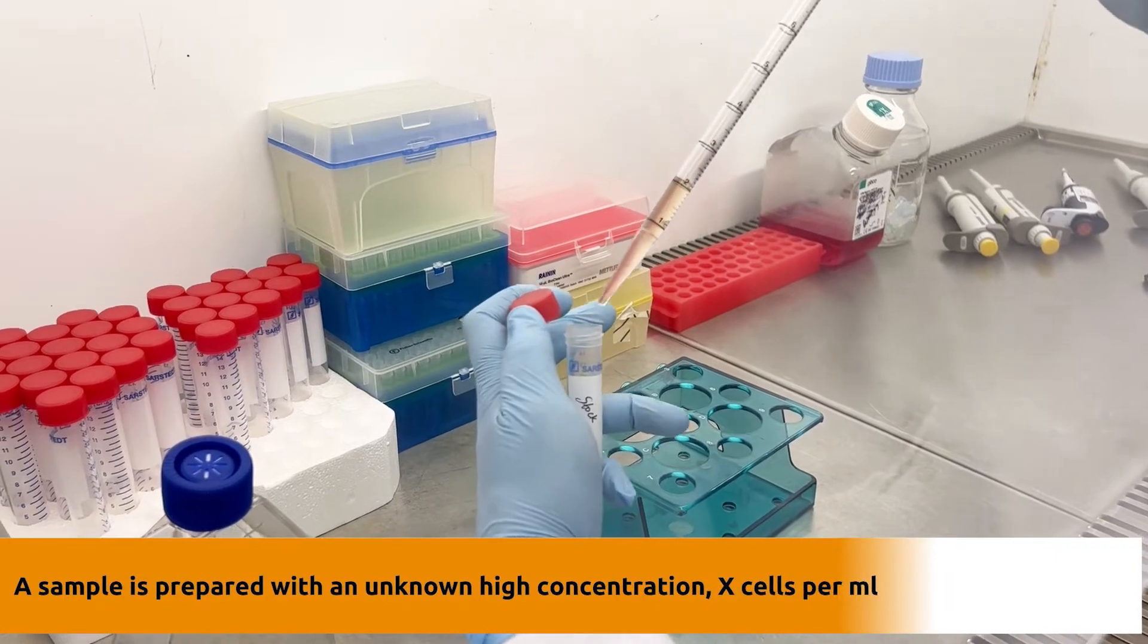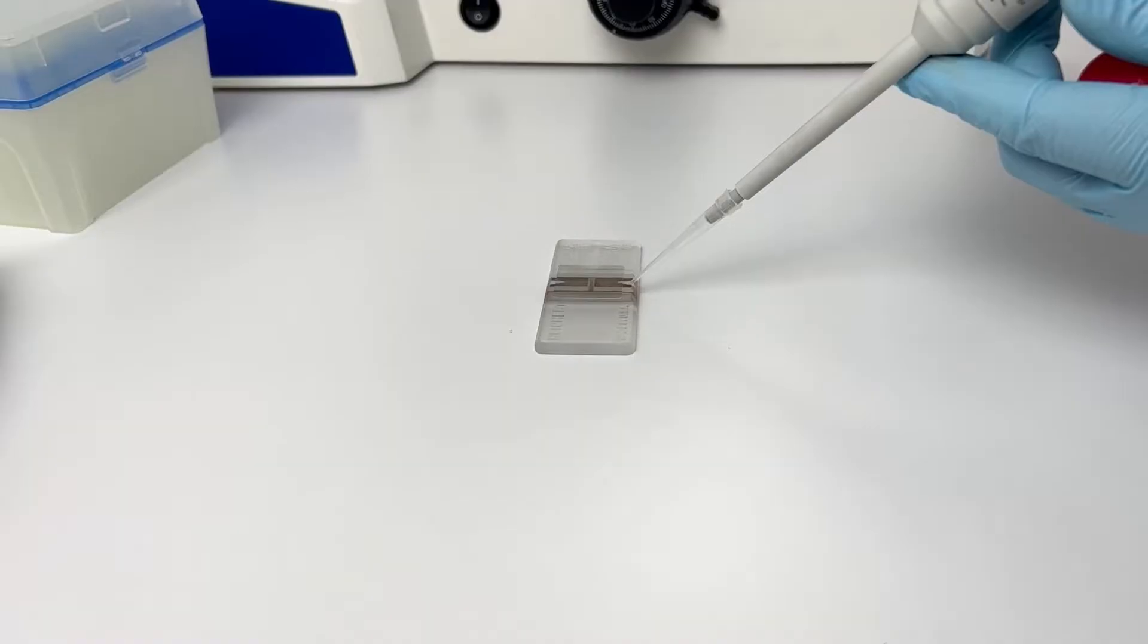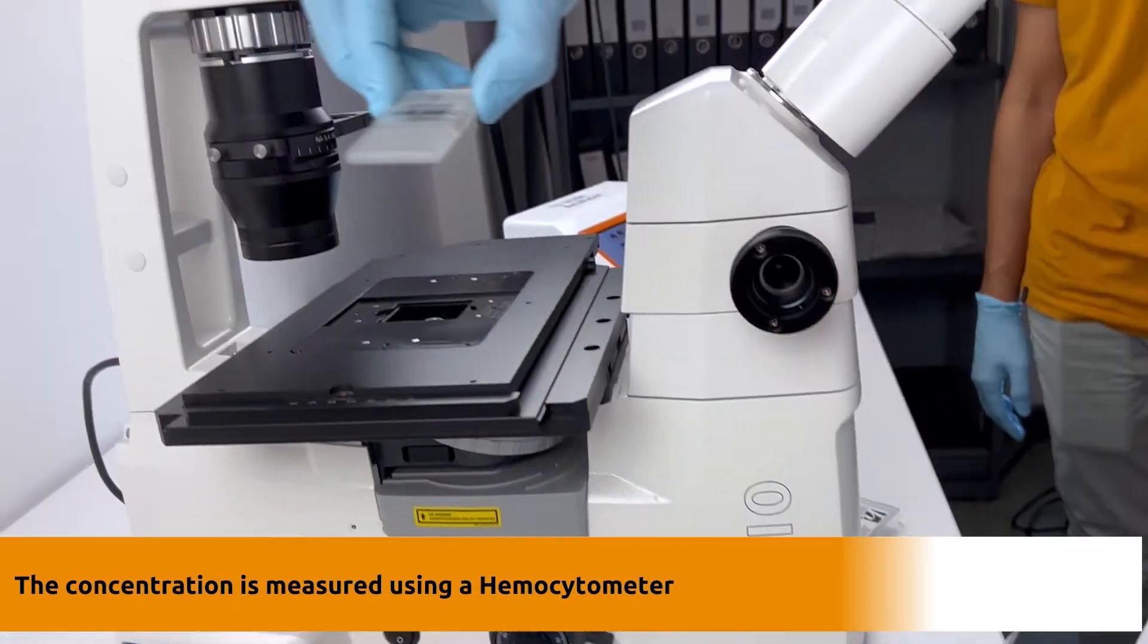For the experiment, first, a sample is prepared with an unknown concentration, x cells per milliliter. The concentration is measured using a hemocytometer.